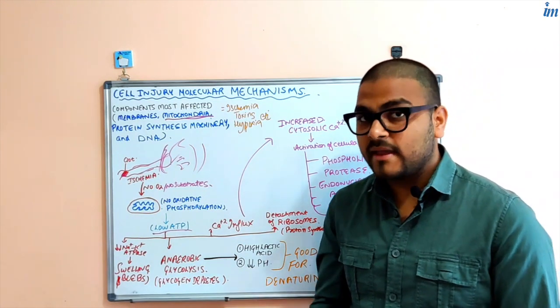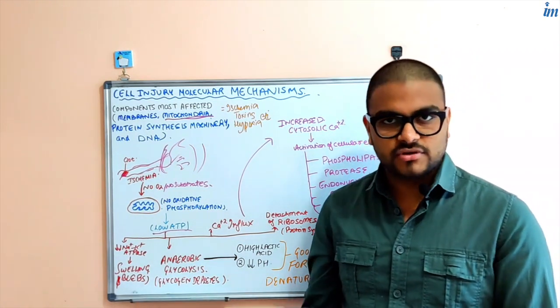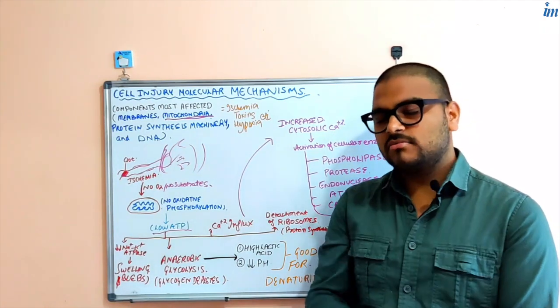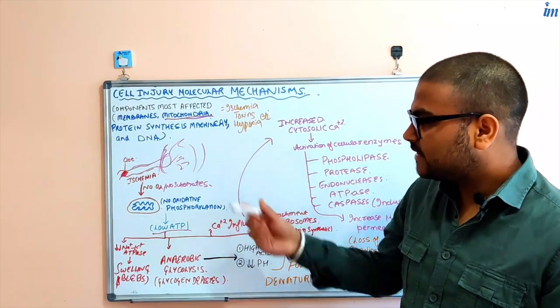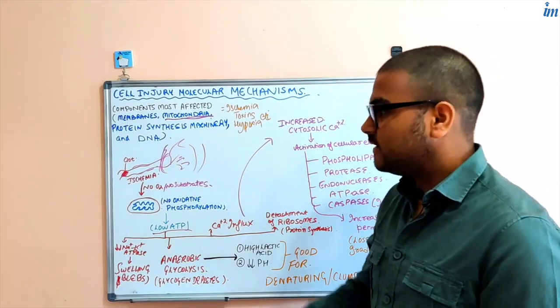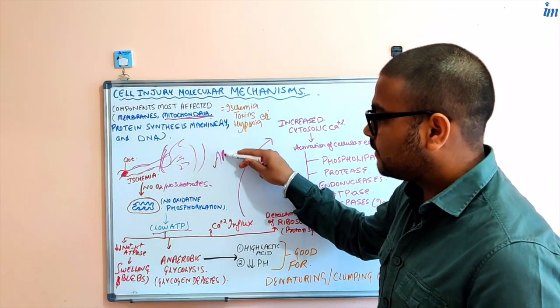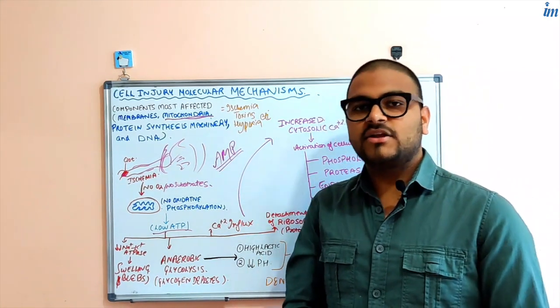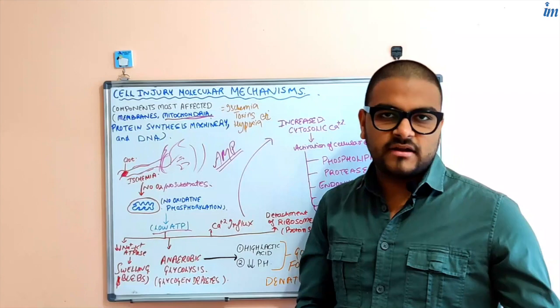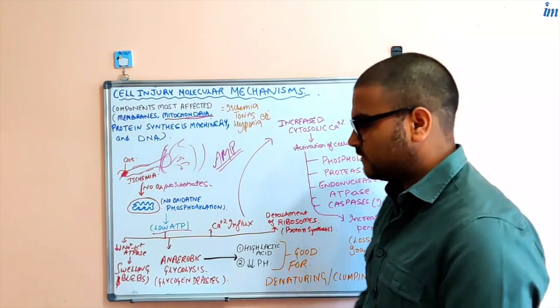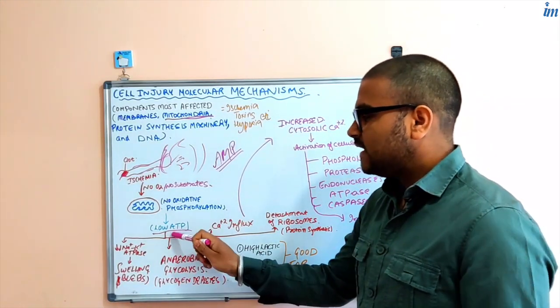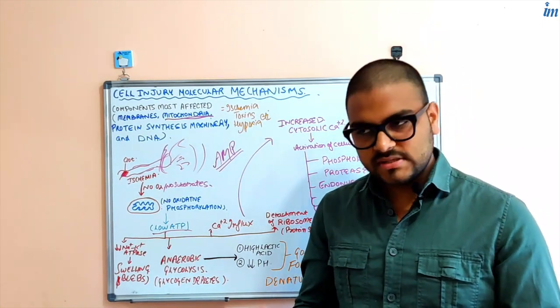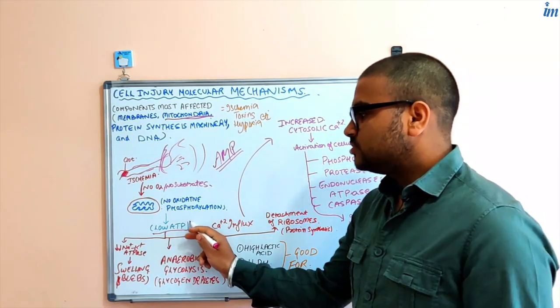ATP is the energy currency of the cell. Without ATP the cell cannot perform the functions that are important for survival. Low ATP will be there because there is no generation of ATP, and the ATP that was already there is getting depleted and converting to AMP.